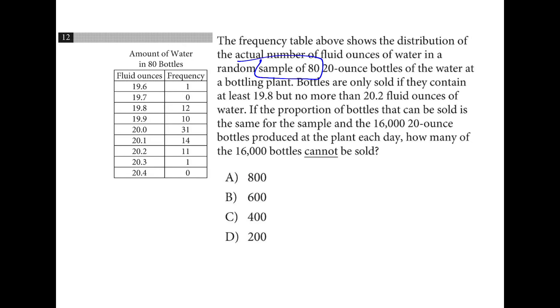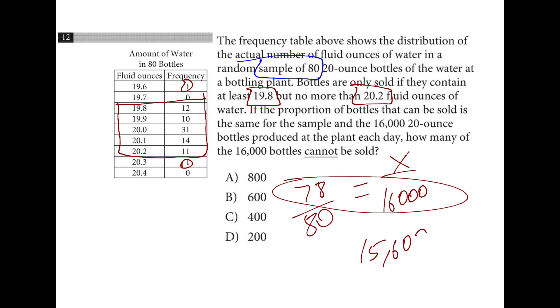We have a random sample of 80 bottles, and there's a range of acceptable, at least 19.8, no more than 20.2. So these many, which is 78 out of the 80, because there's only two outside of the range, were able to be sold. We compare that to out of 16,000, how many? So you take 16,000 times 78, and you divide by 80. This gives you 15,600, which tells you how many can be sold. We subtract this from 16,000, and the difference is 400.